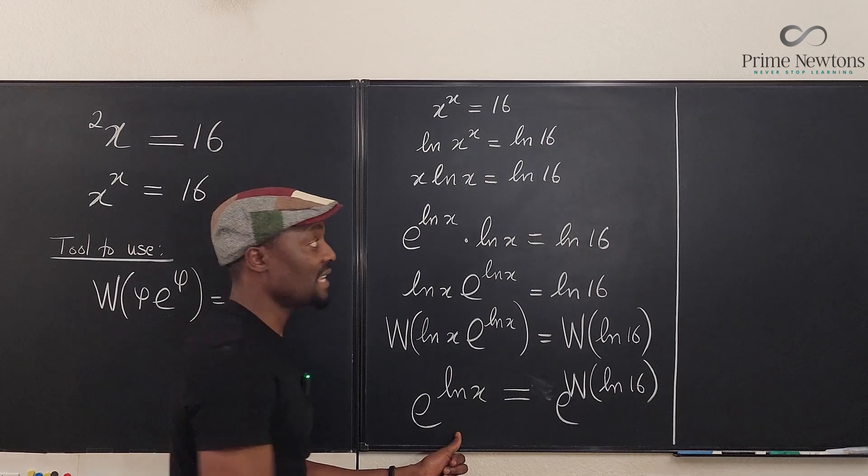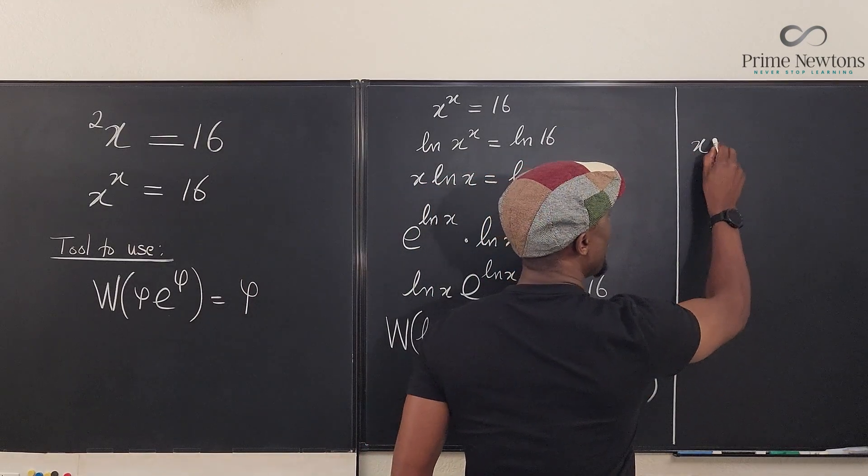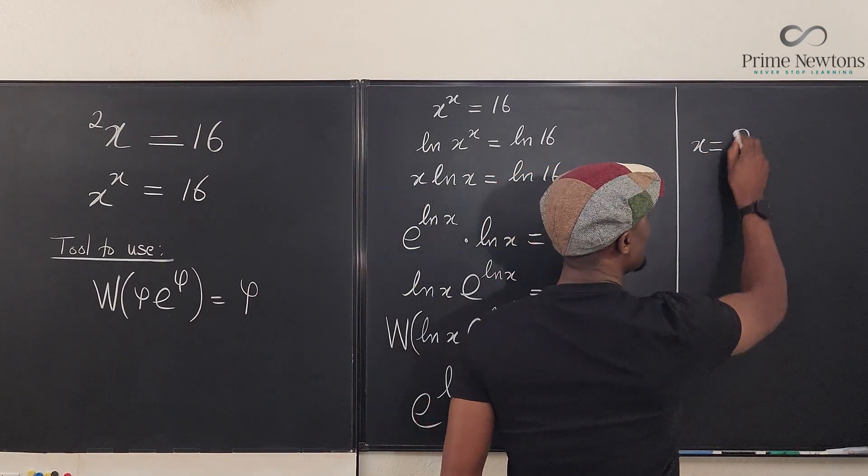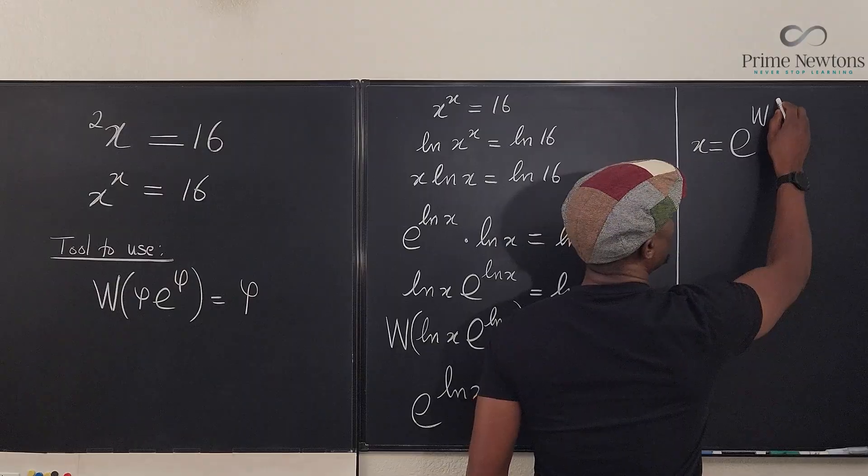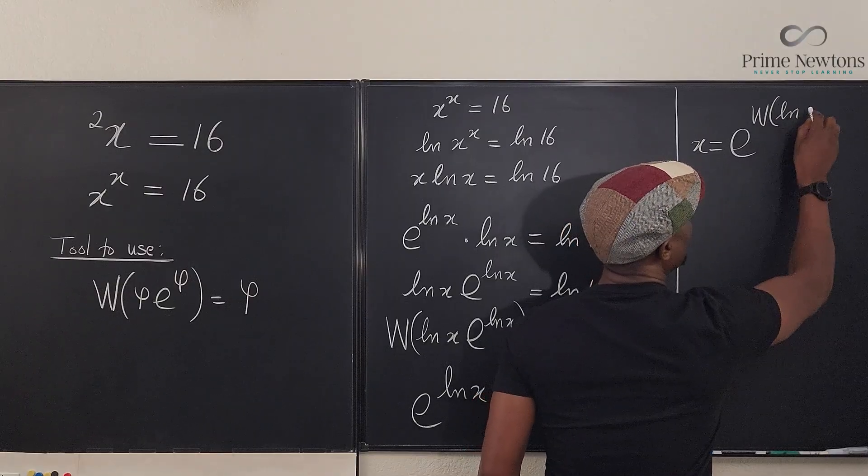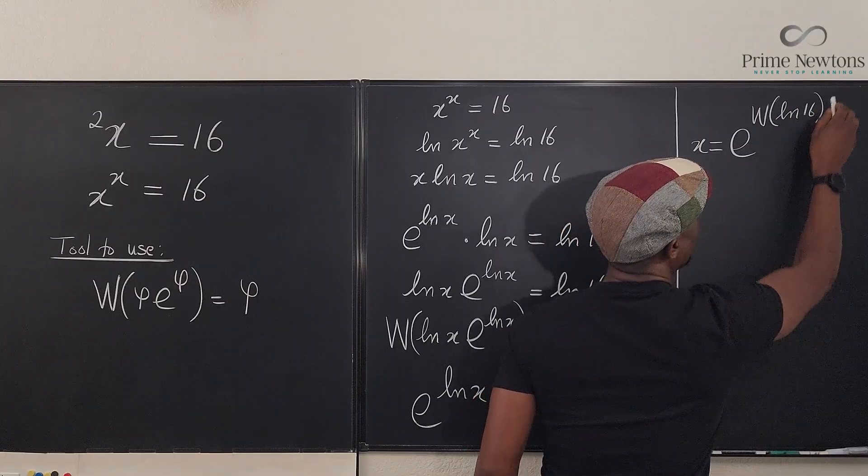But I know this gives me x, which is what I'm looking for. So x is equal to e to the W of ln of 16, and this is the solution.